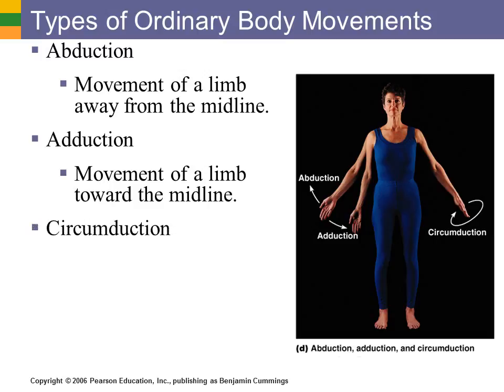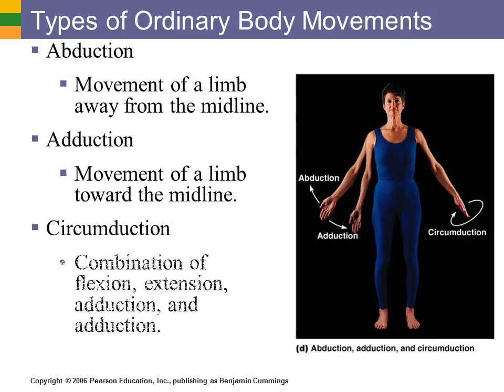Circumduction is a very special type of movement. It is a combination of flexion, extension, abduction, and adduction. The proximal end of the joint — in this case your shoulder joint — remains stationary while the distal end, in this case your fingers, moves in a circle. In three dimensions it would look like a cone. That might help you remember: a cone for circumduction.